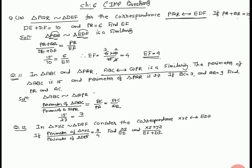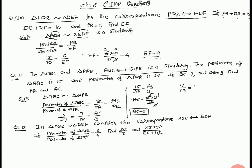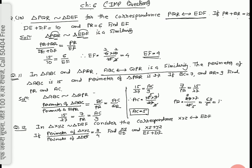We have to find AC and PR. Comparing: 15 upon 27 equal to AC upon 9. Therefore AC equal to 15 into 9 upon 27 equal to 5. We take the second ratio: 7 upon PR equal to 15 upon 27. Therefore PR equal to 27 into 7 upon 15 equal to 63 upon 5 equal to 12.6.